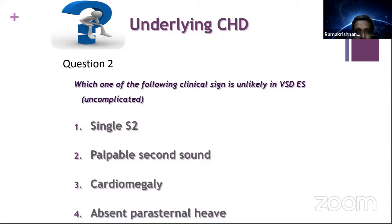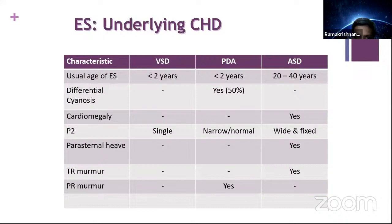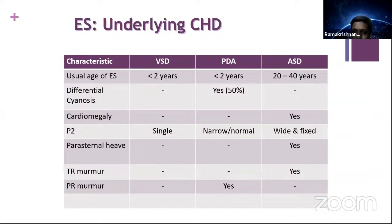The bedside differences between ASD, VSD, and PDA Eisenmenger: VSD Eisenmenger has no cardiomegaly, S2 is generally single, and usually no parasternal heave as an isolated finding. ASD Eisenmenger is the only condition that has cardiomegaly and parasternal heave. The usual age of onset of Eisenmengerization is around 2 years for VSD. No differential cyanosis in VSD Eisenmenger. P2 is generally single in VSD, but can be narrow or normally split in PDA. Generally wide and fixed split in ASD, though narrower than before. PR murmur is more common in pre-tricuspid resistance and PDA Eisenmenger.